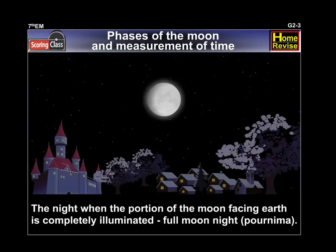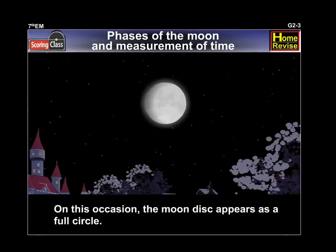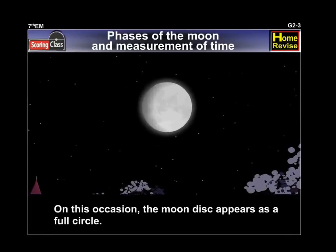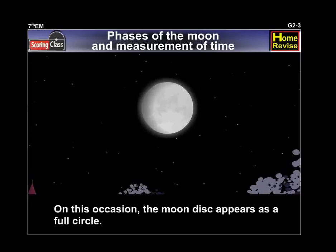The night when the portion of the Moon facing Earth is completely illuminated is called Full Moon Night or Purnima. On this occasion, the Moon disk appears as a full circle.